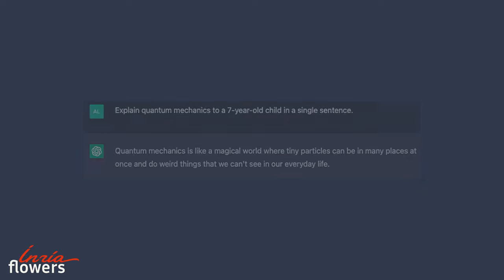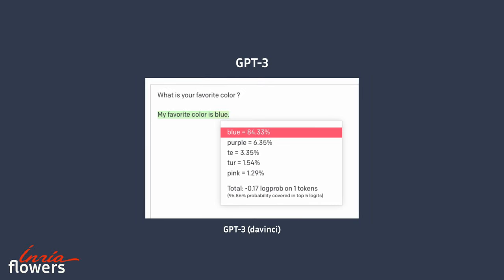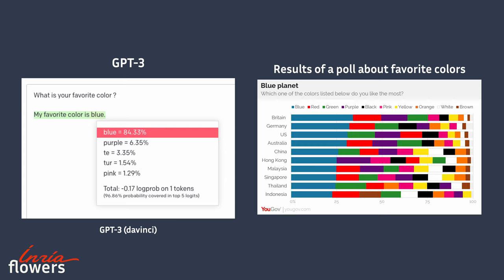ChatGPT's answers are sometimes so human-like that we might wonder if the model has developed some kind of personality. Actually, no — to understand that we have to go back to the task the model follows: predict the word a human is most likely to write after a context of words. Here the model tells us that its favorite color is blue. This doesn't reflect any preference or taste expressed by the model. This answer, along with the probabilities of the other colors, is only reflecting the distribution of preferred colors among humans, expressed in the data on which the model was trained. Thus, associating a personality to the model's answers makes no sense, since the model produces its responses from what different people said in different contexts.